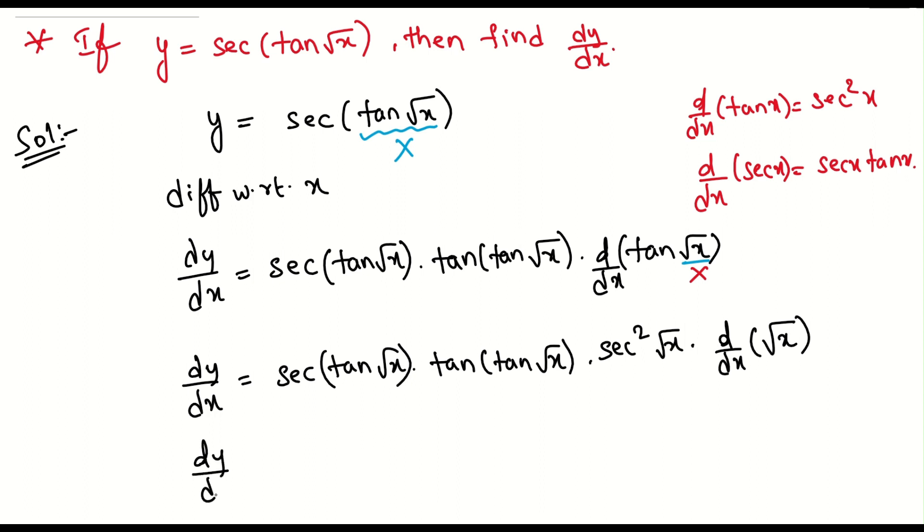This is an easy problem. So this will be dy by dx must be equal to secant of tan root x into tan of tan root x, and this will be secant square root x. What is root x derivative? If you remember we have done in the earlier problem, that will be in the playlist. You can check it out. We know that d by dx of root x value will be 1 by 2 root x. This can be evaluated from the definition. So I will be doing the same here. What is root x derivative? 1 by 2 root x.